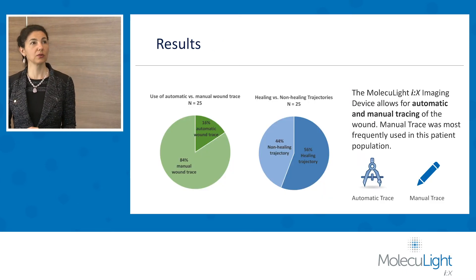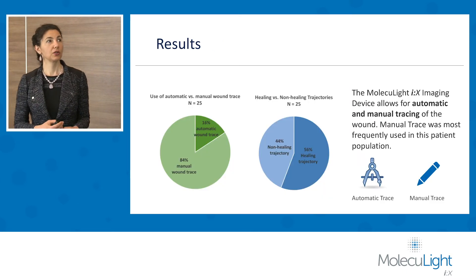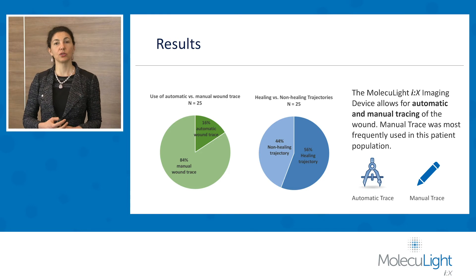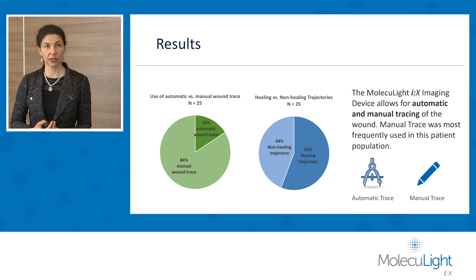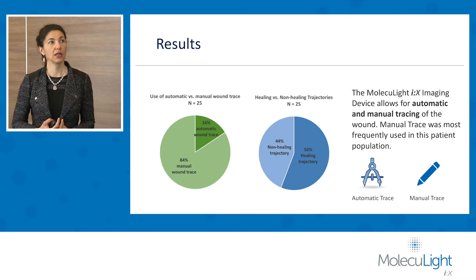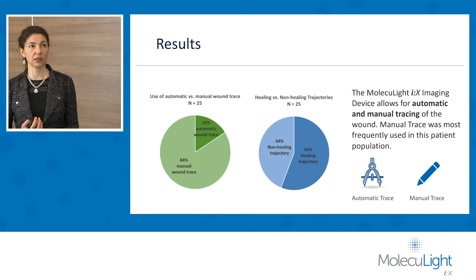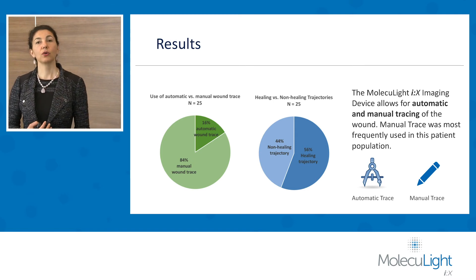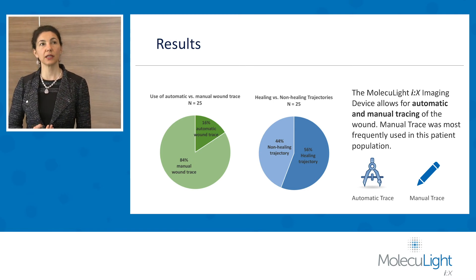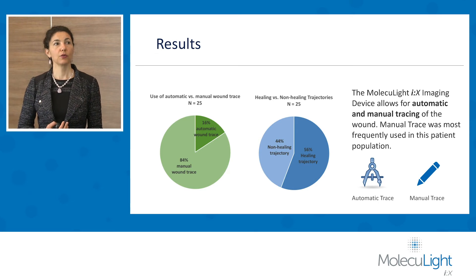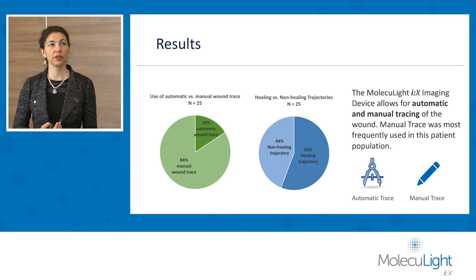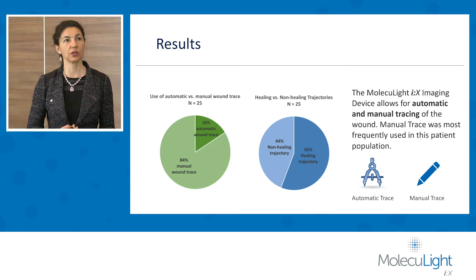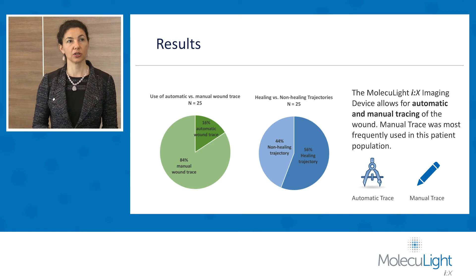In total, manual tracing was used in 84% of cases and automatic tracing in 60% of cases. In the sample, 44% were on a non-healing trajectory and 56% were on a healing trajectory.